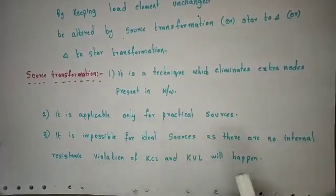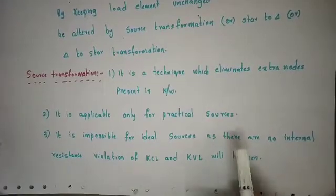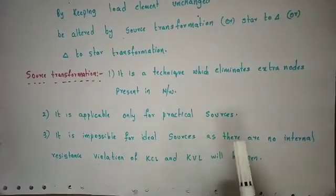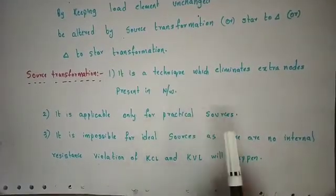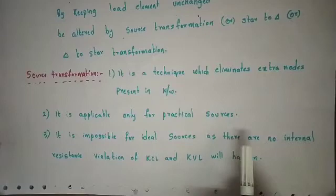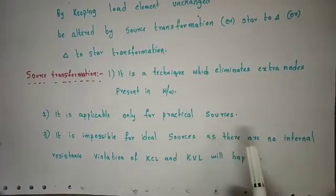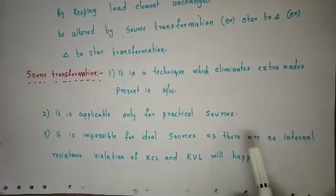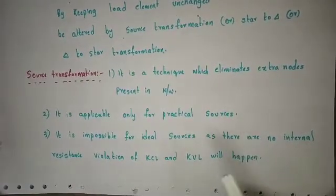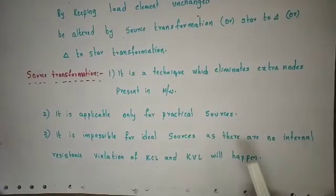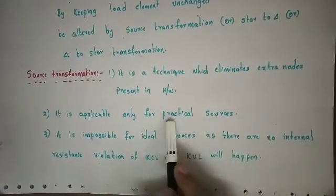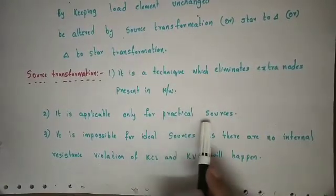The reason is internal resistance. If you don't have internal resistance, KCL and KVL are not applicable. A short circuit exists, which is an unstable circuit. So source transformation is only applicable for practical sources.